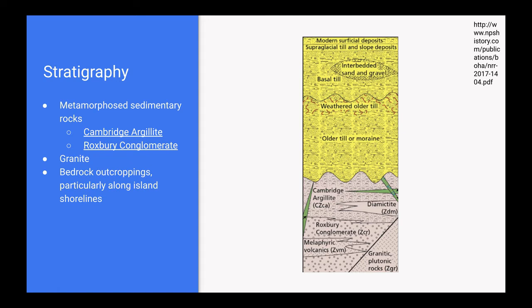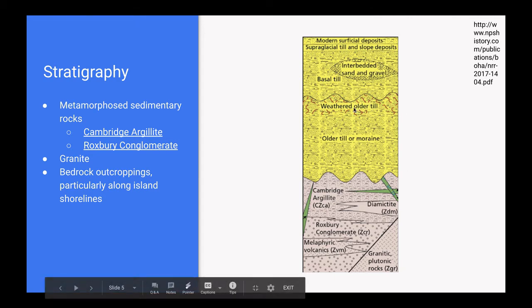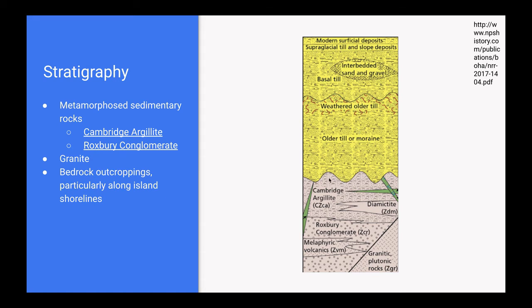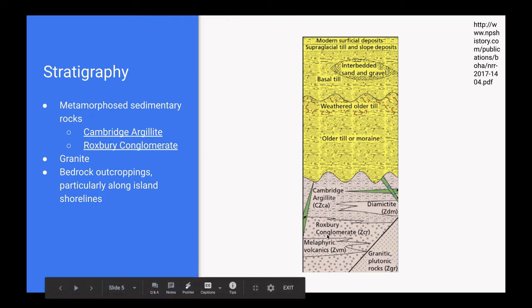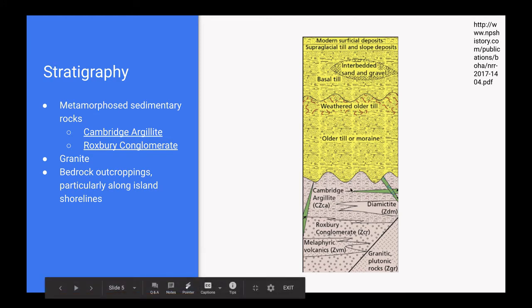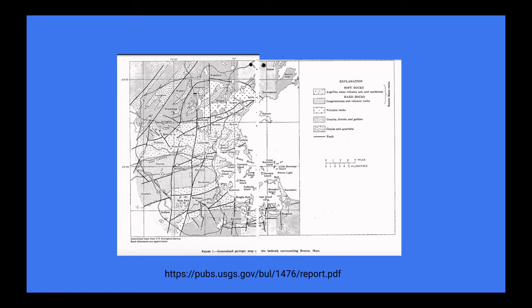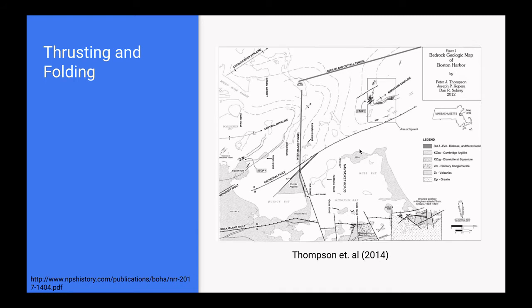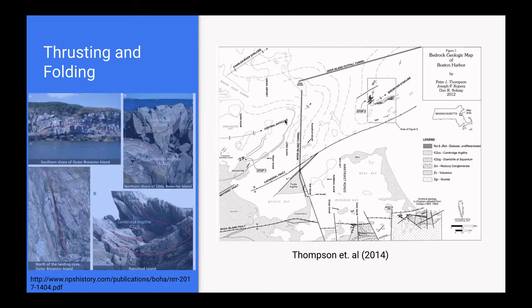Next we'll take a look at the stratigraphy of the Boston Basin. There are two parts: the bedrock at the bottom and then glacial till that was deposited later on top of the bedrock. The bedrock is composed of mainly metamorphosed sedimentary rocks like Cambridge Argillite and Roxbury Conglomerate. There are also some igneous intrusions with dikes and granite, and these bedrock outcroppings kind of poke through the surface at some of the islands and can be seen along island shorelines. This map here shows the bedrock geology throughout Boston Harbor — most of the islands are formed of argillite and there's also some igneous rock mixed in. And this map shows the various faults and folds throughout Boston Harbor, including the Cathedral Fault and some anticlines, which are responsible for creating the bedrock outcroppings found in many of the Boston Harbor Islands.